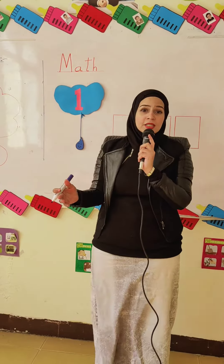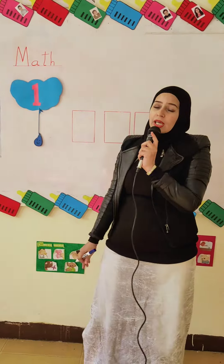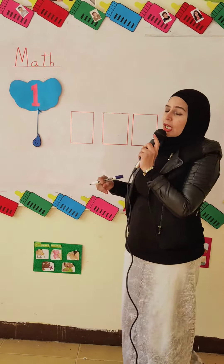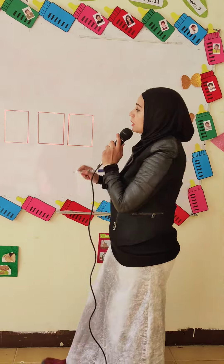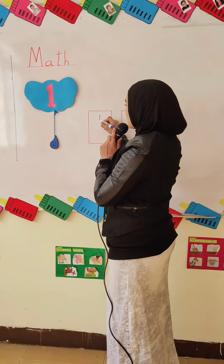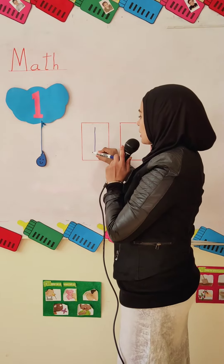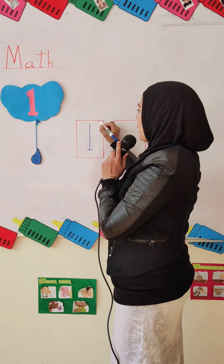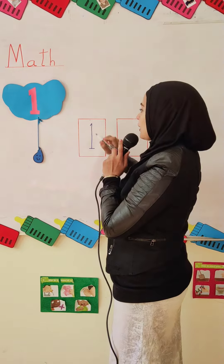Receive voice. One. One. Okay. How we can write number one? How we can write? Look at the board. Start from the top, then make a line down, then make a straight line, back to the top to make a diagonal line down.